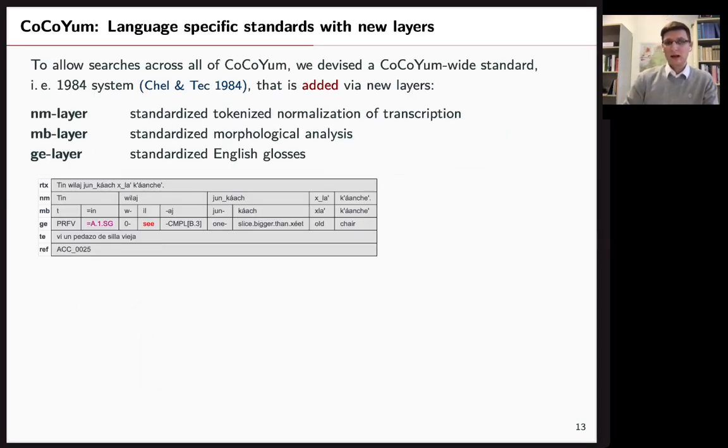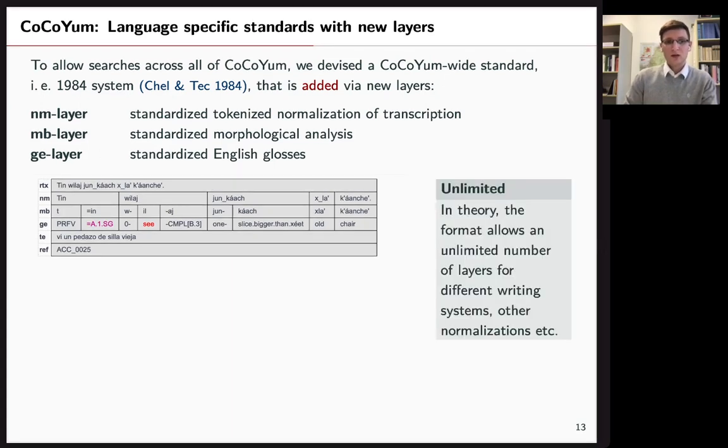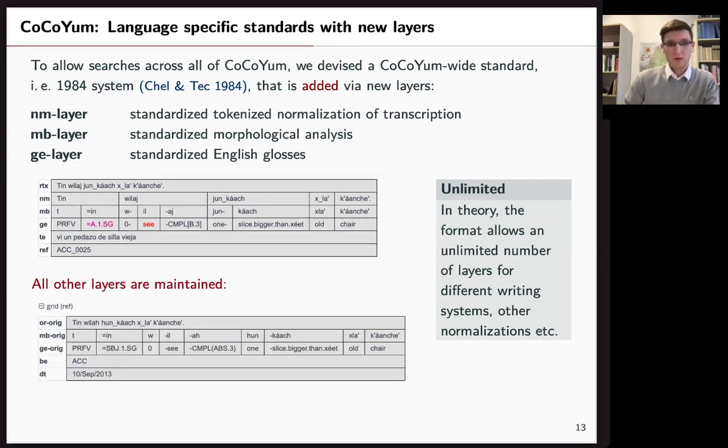And we did this by never deleting anything. We only add new layers when corpora are added to CoCoYum. And this new layer will be focused on the 1984 convention that the community itself is using nowadays mostly. And we add this with a normalization layer and a morphological layer. And the glossing layer that we add the GE layer in English will use our interpretation of the glossing from our FLEx lexicon. However, because there are so many layers that you can add, that's basically unlimited, we will never lose what has been there before.